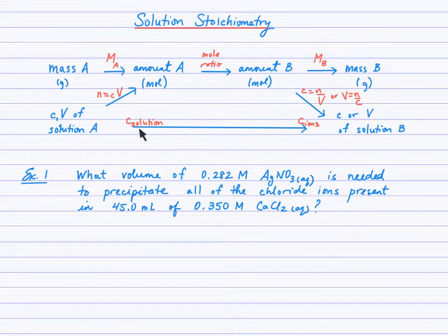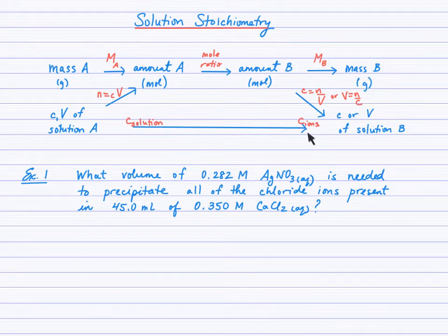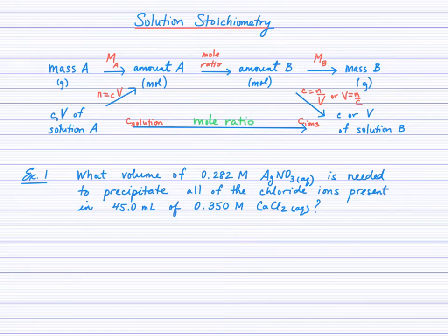There is a shortcut for a question that doesn't require all three steps — if we're given the concentration of a particular solution and just asked for the concentration of ions that exist in that solution. We use the mole ratio in that case, and that's coming up in example 4.